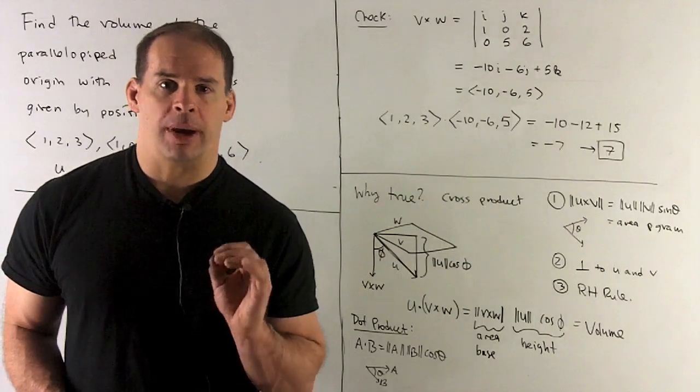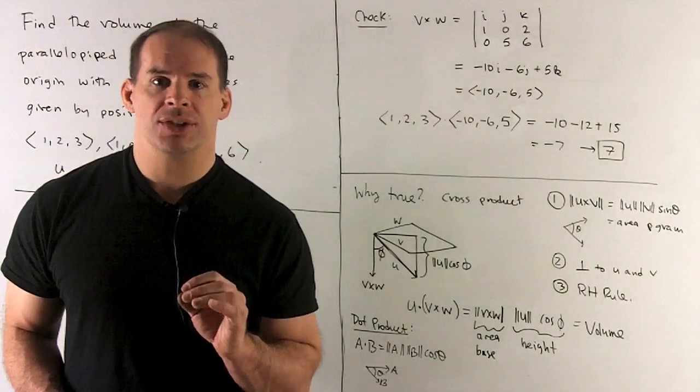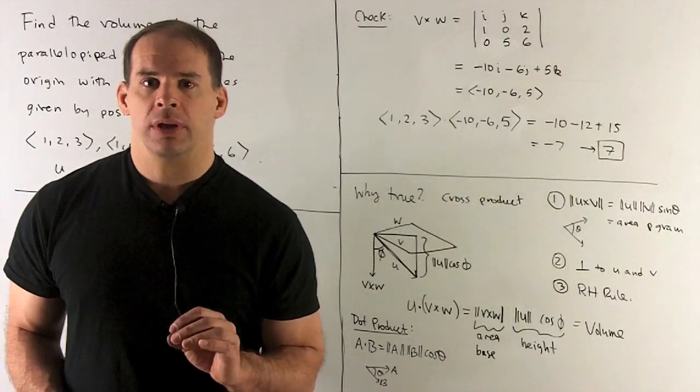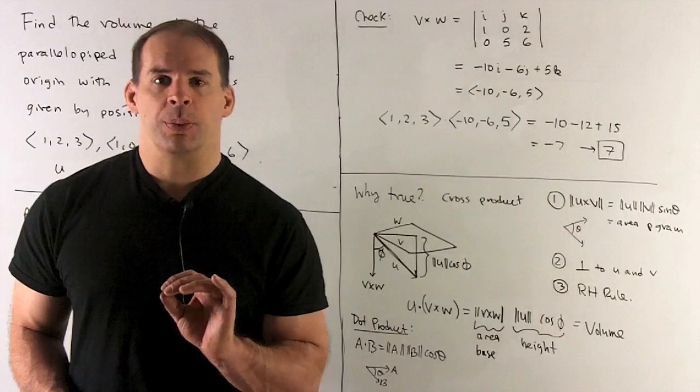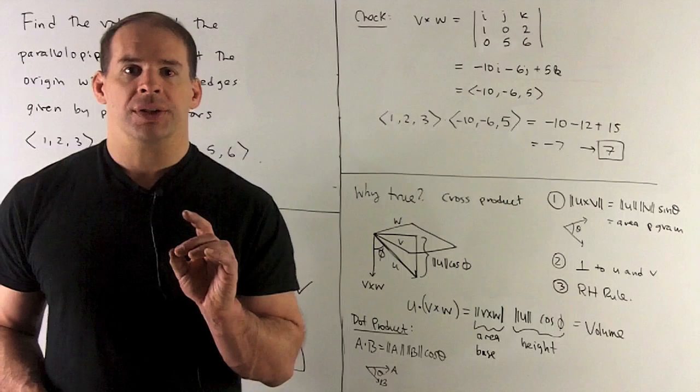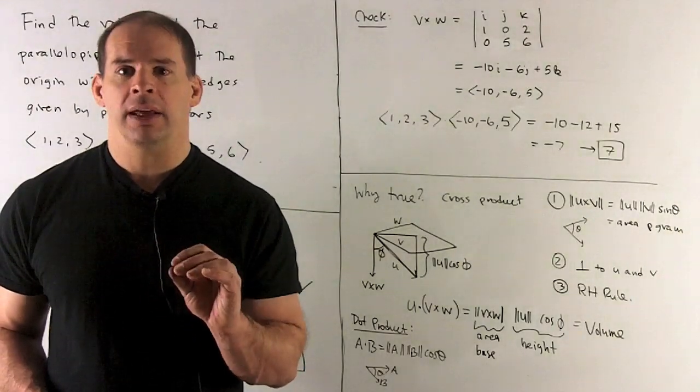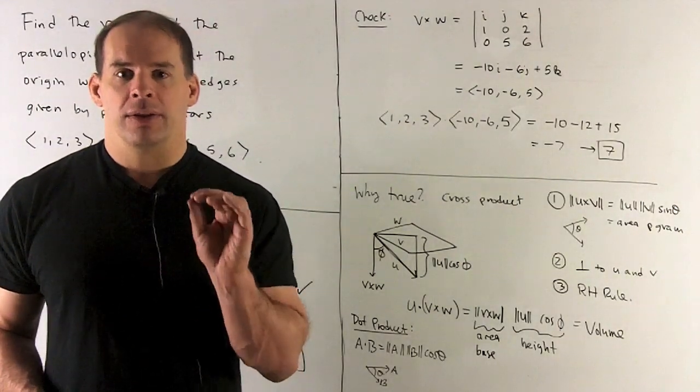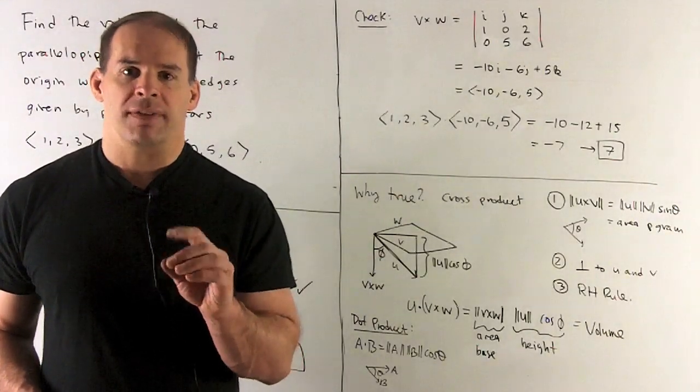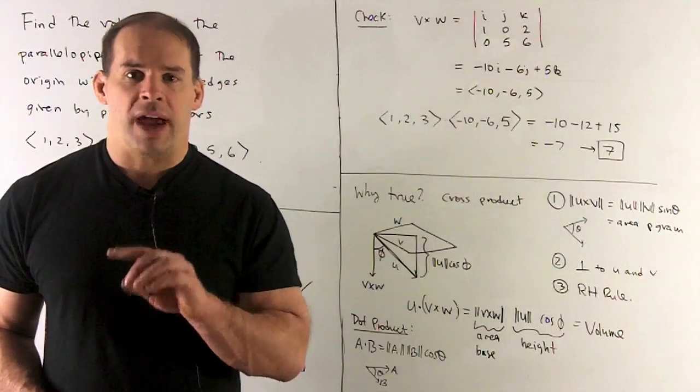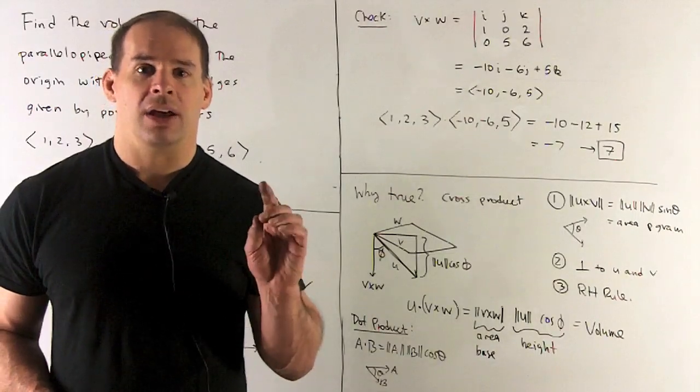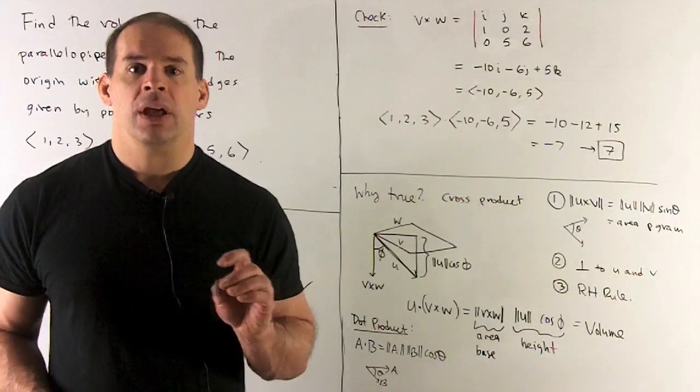Where does the formula for the volume of the parallelepiped come from? That is, why U dot V cross W, throw away the sign. Okay, to get to that, we have to unspool a bunch of definitions. So first, okay, the cross product. We know how to compute the cross product mechanically, but let's take a look at the geometric interpretation. So it's going to have three things. The first, if I take V cross W,